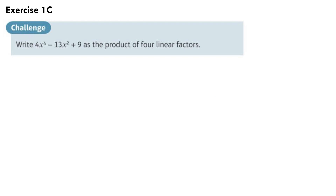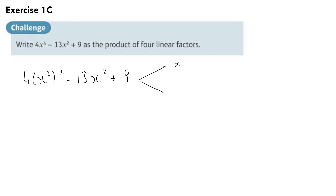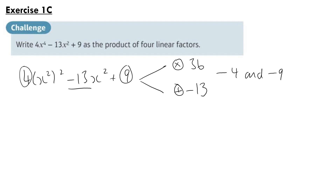Moving on to this question from Exercise 1c: write 4x⁴ - 13x² + 9 as a product of linear factors. The first thing we can do is write 4x⁴ as (4x²)² — sorry, as (2x²)² — minus 13x² + 9, which allows us to treat this as a quadratic in terms of x². To factorize this, the method I like to use is finding two numbers which multiply to 4 × 9 = 36 and add to the coefficient of x², which is -13. The two numbers are -4 and -9.